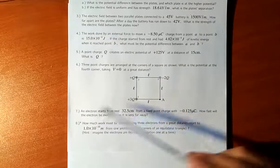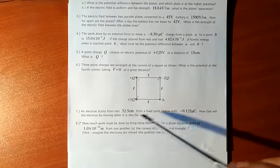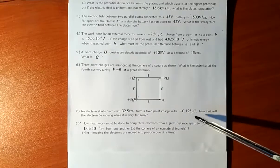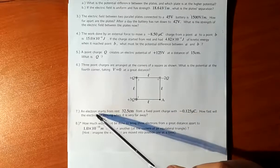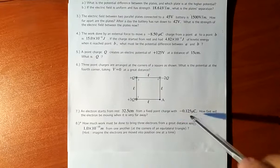Okay, question 7. An electron starts from rest, 32 and a half centimeters from a fixed point charge. That is a negative charge, so the electron with its negative charge is going to be pushed away from this charge.